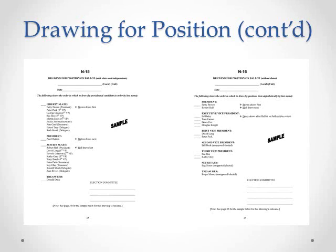Once you've determined the number of pieces of paper you need and the order in which the drawing will take place, you'll instruct each candidate, representative of the slate, or proxy who is present to draw one of the numbered pieces of paper from the container in the proper order. If a candidate or slate is not represented, an election committee member will draw on their behalf. Each time someone withdraws a piece of paper, you will announce the number that was drawn. Remember that the number drawn by the slate representative is the position for every member of the slate. After drawing is complete, you will send notice to each candidate of the result and post notice to the membership on bulletin boards, as in Form N-17.